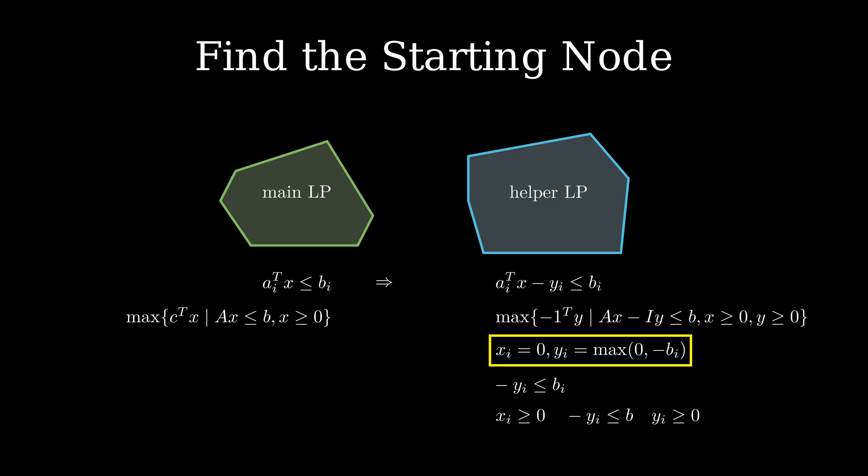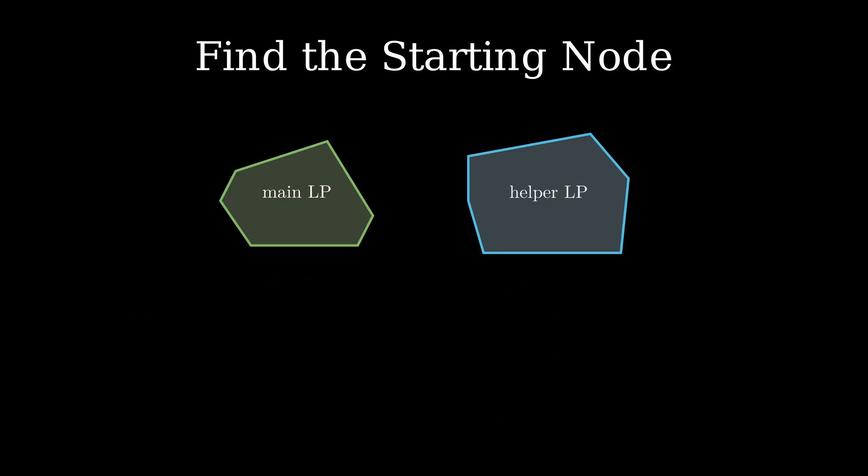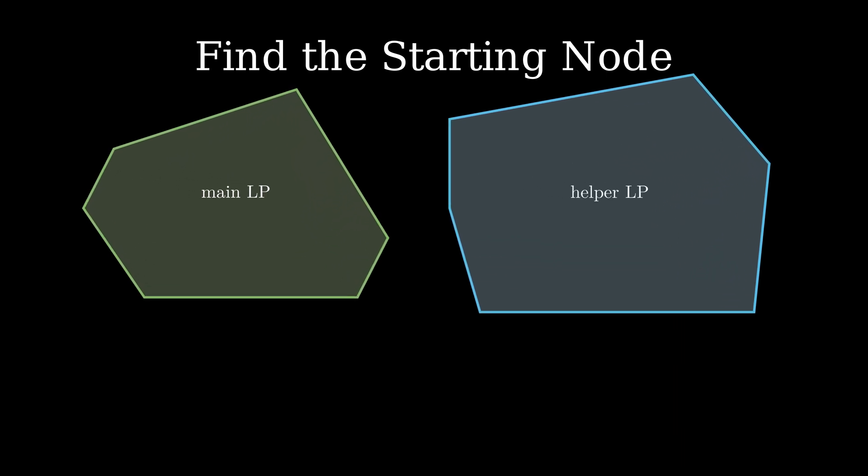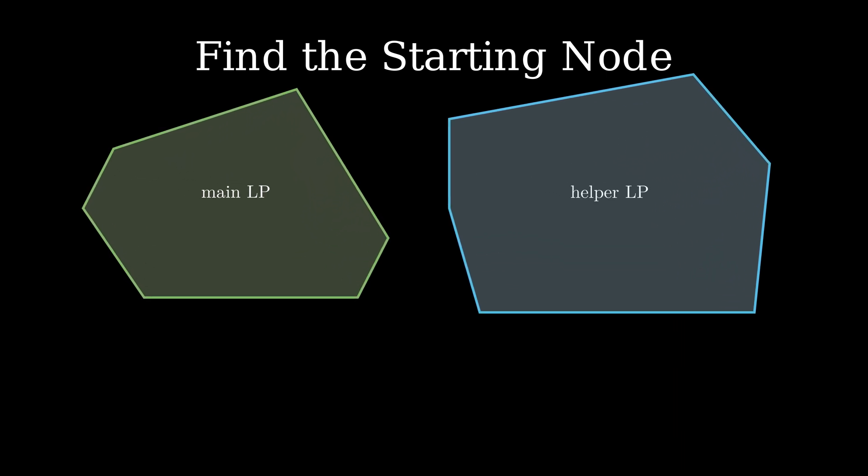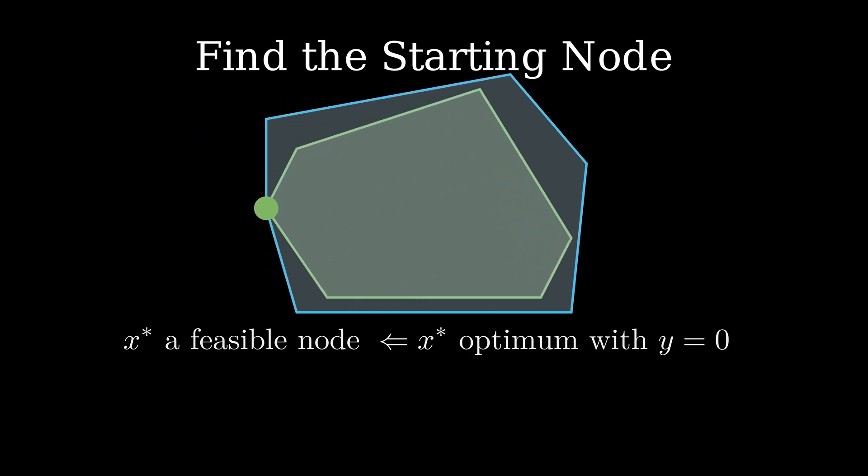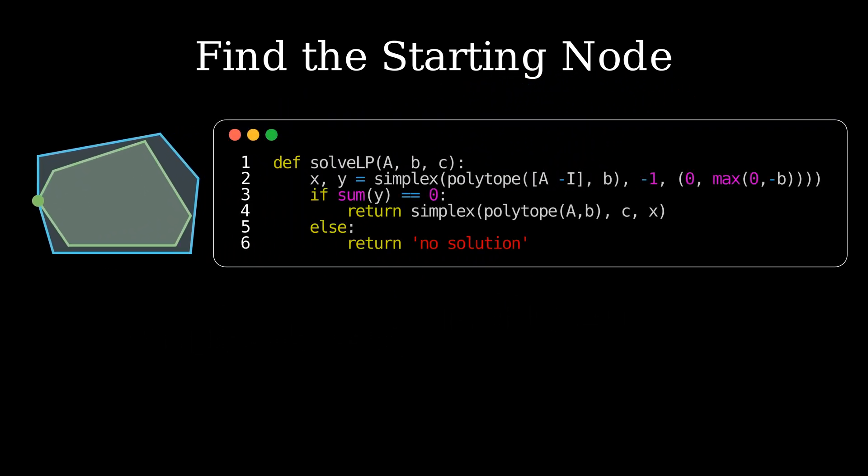We can then solve the auxiliary LP using the simplex algorithm. If the original LP is feasible, then there exists a solution for the helper LP where all the y variables are set to 0. Recall that we try to minimize y as our objective. Therefore, if we find a solution where y is set to 0, the solution of the helper LP will be a feasible point for the original LP. Afterwards, we can call the simplex algorithm again on the original LP to solve it. This gives us the following two-phase simplex algorithm to solve LPs.